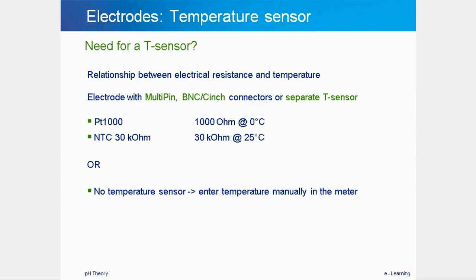When the sample is not at room temperature or is at varying temperatures, a temperature sensor is very useful to perform automatic temperature correction of measured pH values. The temperature can be measured with a separate temperature sensor connected to the pH meter, or with an integrated temperature sensor in the pH electrode itself. This can be done with multi-pin connection pH electrodes, which have connections via a BNC connector for the reference and pH electrodes and a chinch connector for the temperature sensor. Built-in temperature sensors are available as PT-1000 or NTC.